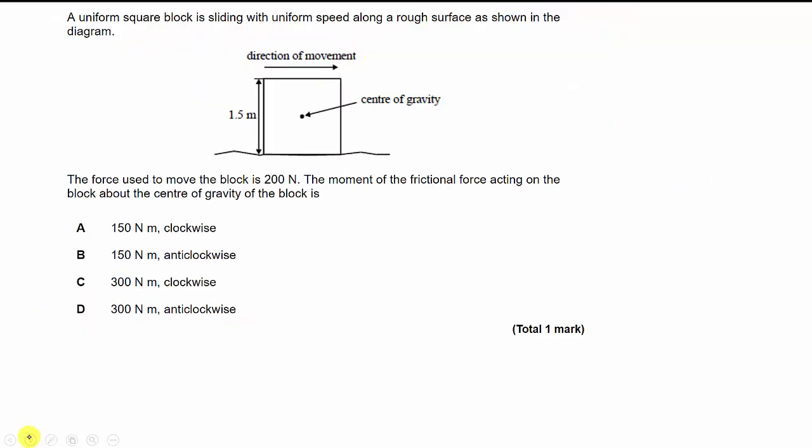Next question. Looks similar to one we've already seen. Pause the video, read the question. This time we're being told that a uniform square block is sliding with uniform speed. If the speed is uniform, well certainly if the velocity is uniform, we know that the forces must be balanced. So I'm going to assume that the forces are balanced.